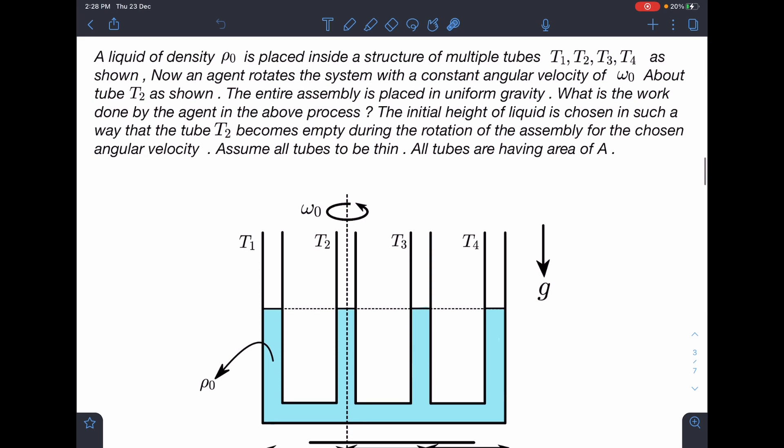So here is the problem statement. A liquid of density rho naught is placed inside a structure of multiple tubes T1, T2, T3, T4 as shown. Now an agent rotates the system with a constant angular velocity of omega naught about the tube T2 as shown. The entire assembly is placed in uniform gravity.